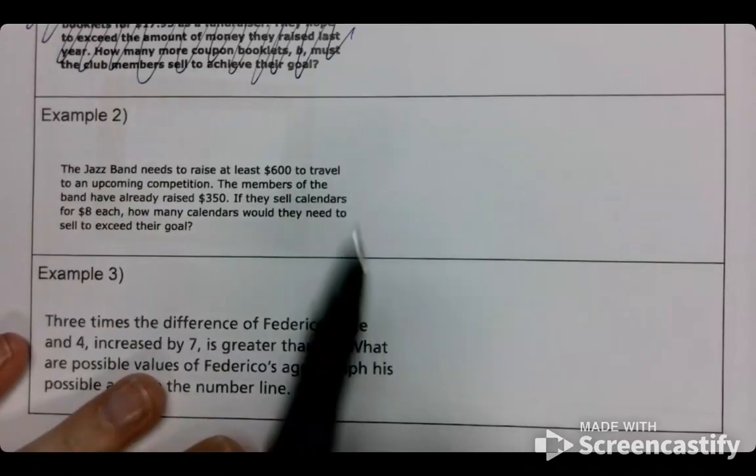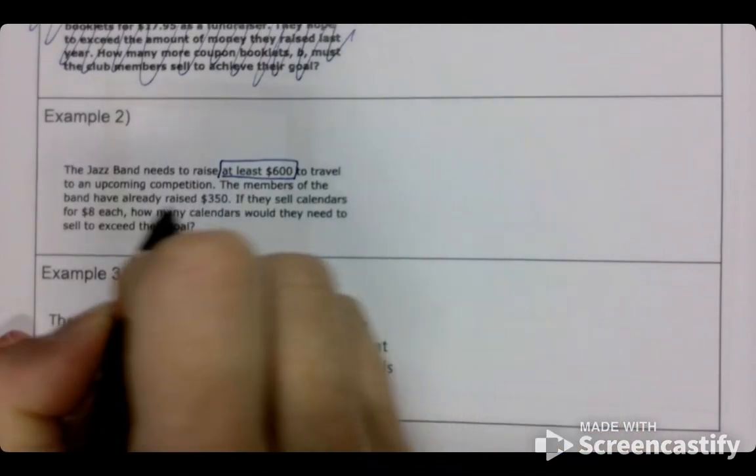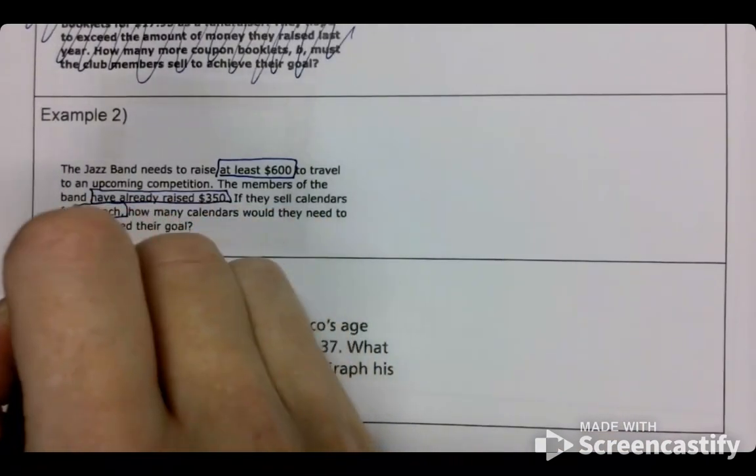So see how it says we have at least $600. They already have raised that much money and the calendars are $8 each.